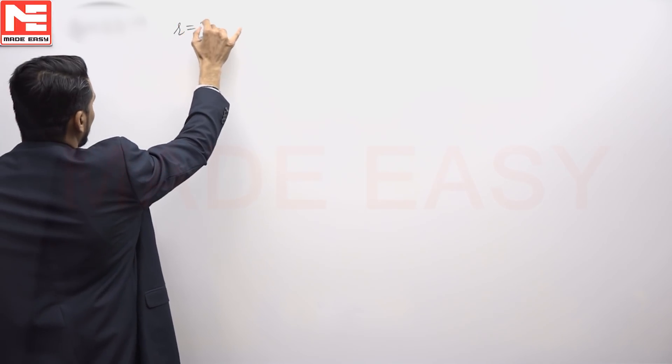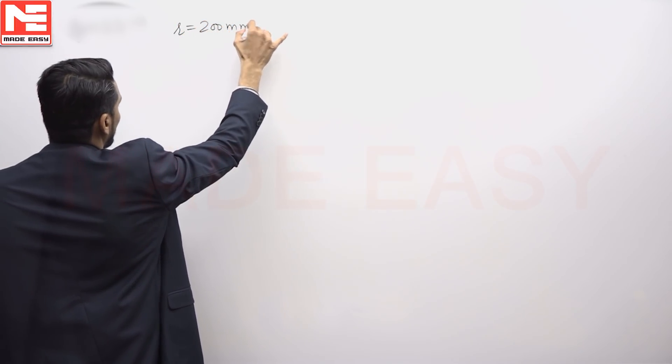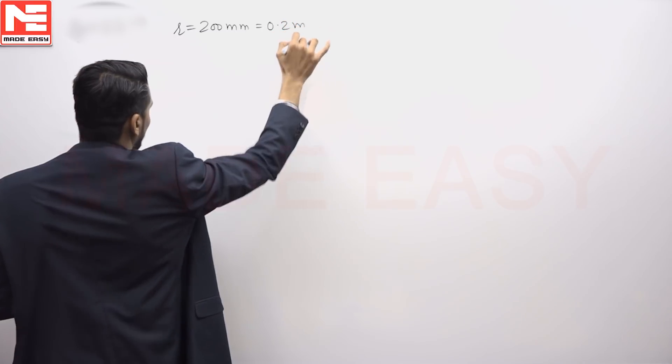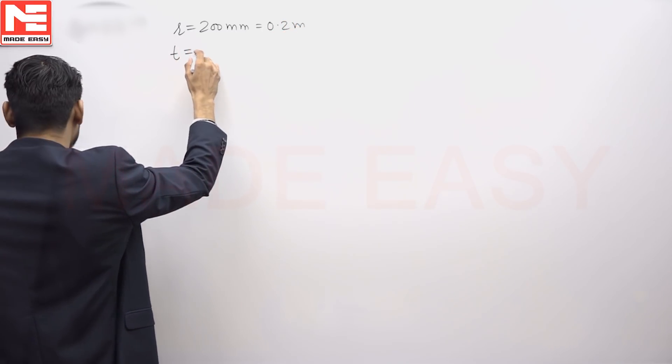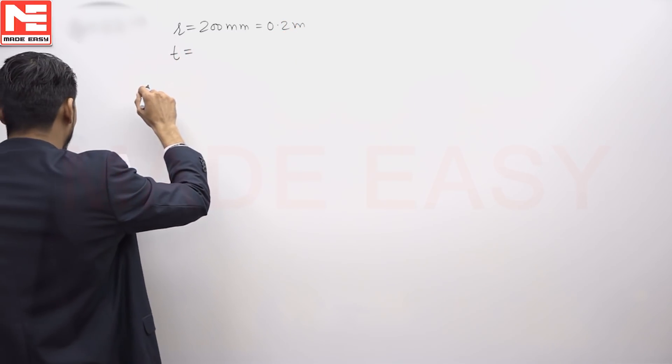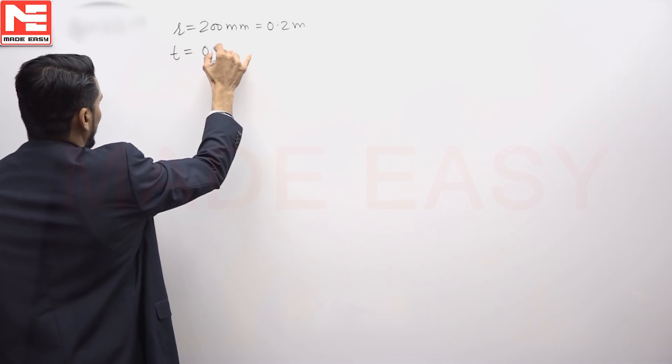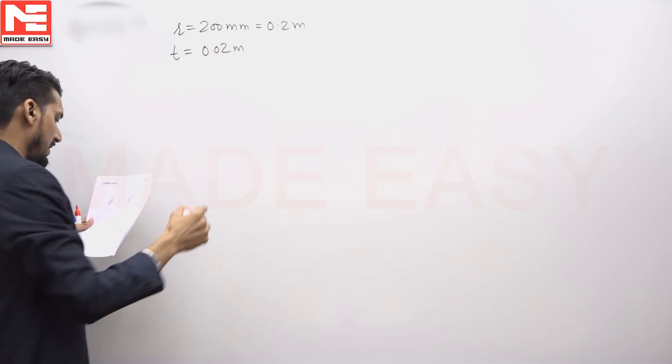The radius is given as 200 millimeter, which is 0.2 meter. Thickness is given as 0.02 meter or 20 millimeter.